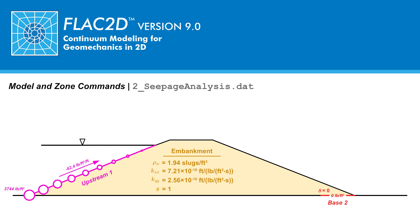The first command will be model restore 1-staticanalysis.sav so that the save state solved in tutorial 1 is restored. Next, we specify the fluid constitutive model for the embankment. For this analysis, the anisotropic fluid constitutive model will be used, specified with the command zone fluid cmodel anisotropic range group embankment. The range group embankment part allows specification for the embankment only. Since all zones are embankment, this is included here to highlight the use of the range group command.